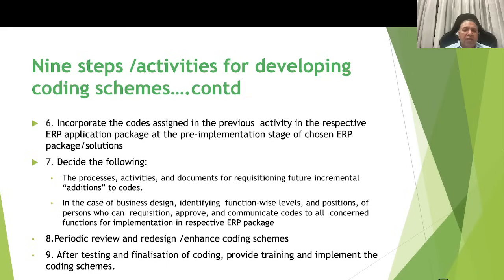Step 5 is incorporating the codes assigned in the previous activity into the respective ERP package at the pre-implementation stage. Step 6: Deciding the processes, activities and documents for requisitioning future equipment additions to codes. Step 7: Identifying function-wise levels and positions of the person who can requisition, approve and communicate codes to all concerned functions. It means assigning a level or position rather than a name. Step 8: Periodic review and redesign or enhancement of the coding schemes. Step 9: After testing and finalization, providing training and implementing the coding schemes across the organization.